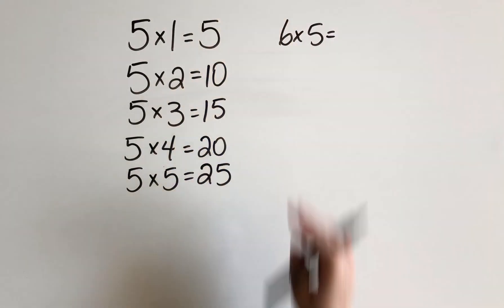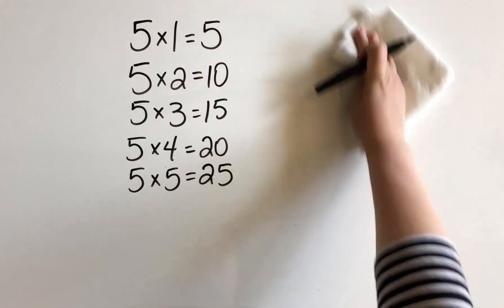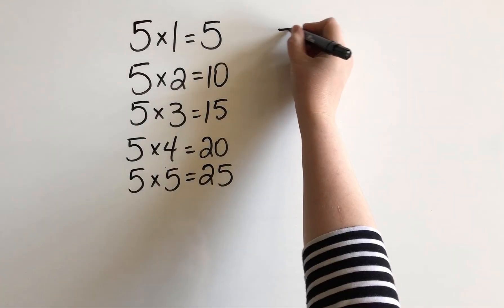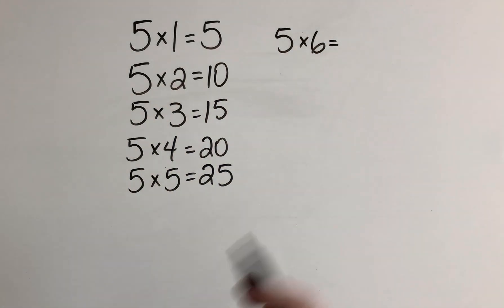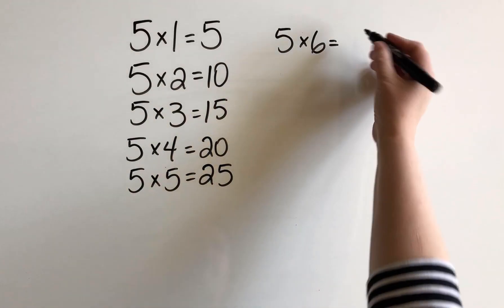For 6. Oh, sorry. 5 times 6, I was going to write. It doesn't really matter, does it? Because the order of factors doesn't matter, but we'll keep it consistent for this video. So 10 times 6 would be 60. And half of that is 30.